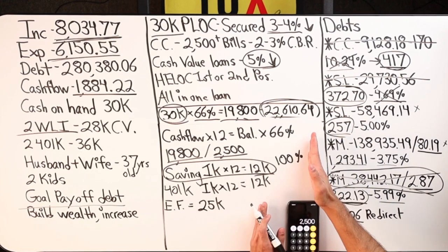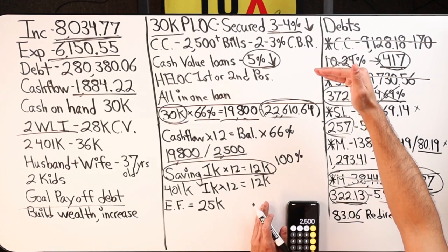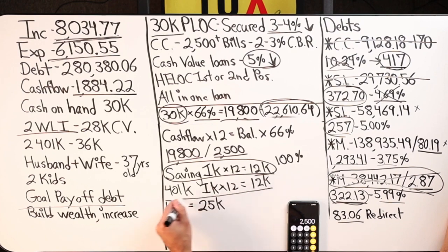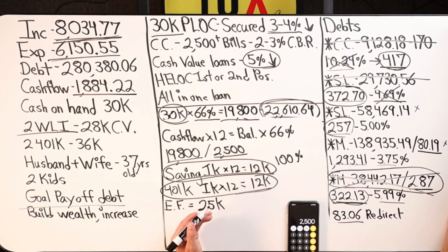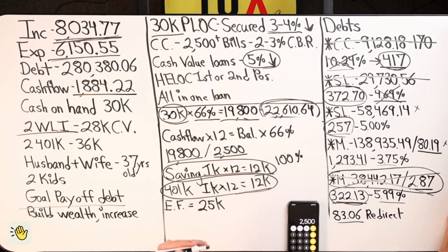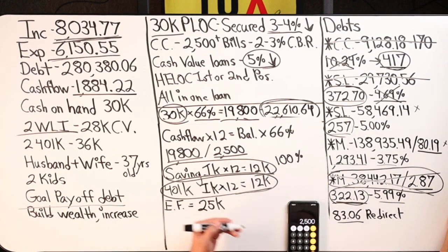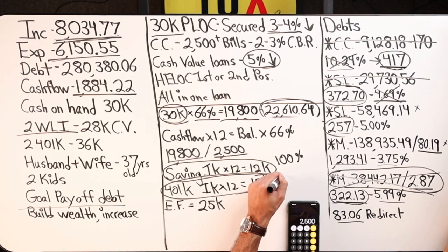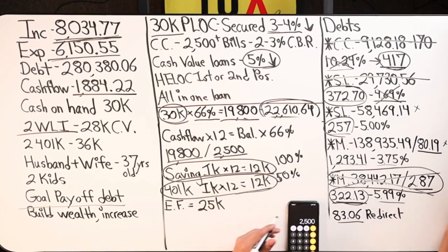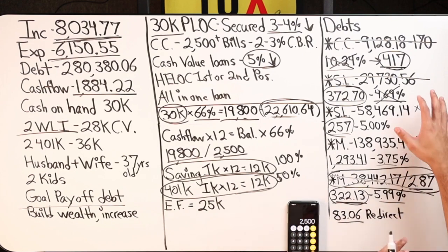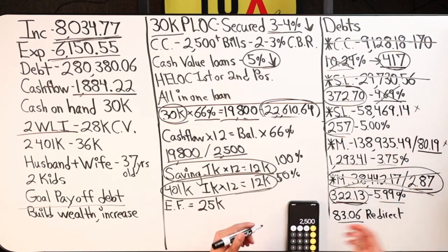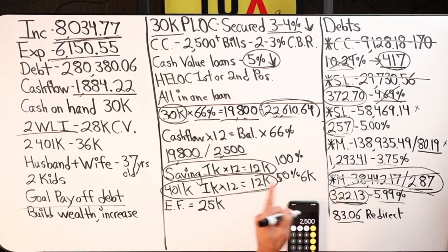I'd immediately start with $12,000, then decide if we want to go a little higher. Then I look at their 401k — and if they come to the conclusion that even though it's averaging 6–8% return, they're paying 2–3% in fees, plus deferred taxes and inflation, and they say, 'I want guarantees — I'd like to allocate 50% of that to the policy and move the other 50% toward paying off debt or starting a business.' That's $6,000.